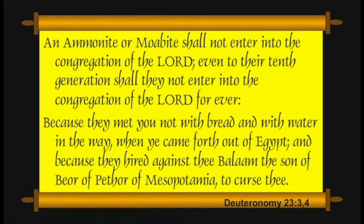Their exclusion was because of failure to extend hospitality. It's interesting to realize that at the great white throne judgment, people are going to be surprised by how they're being judged — they're going to be judged by how they treated 'my brethren.' There are three groups: nations that are blessed, nations that are cursed, based on how they treated the nation of Israel. Check it out — Matthew 25, very carefully.